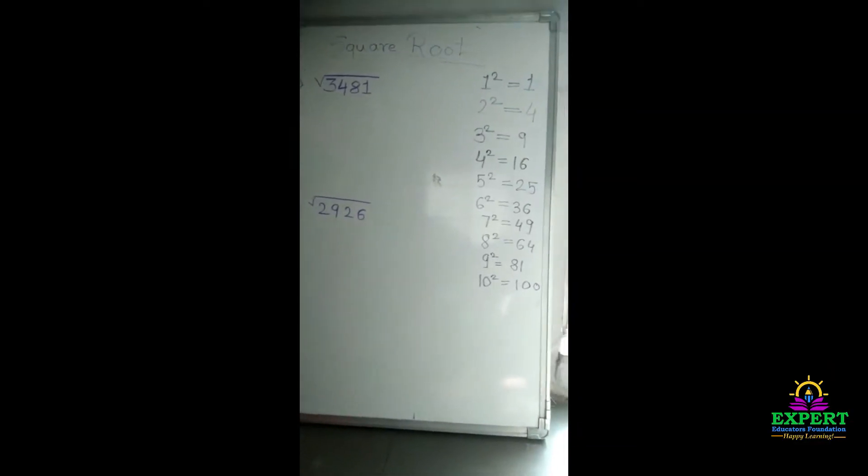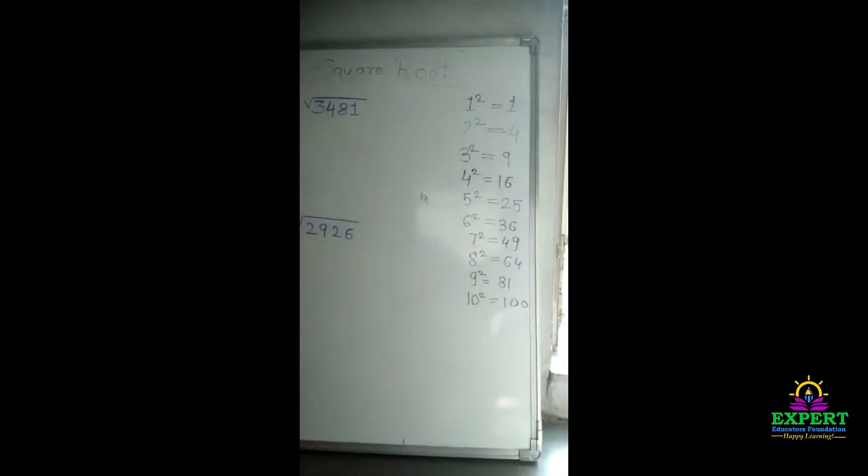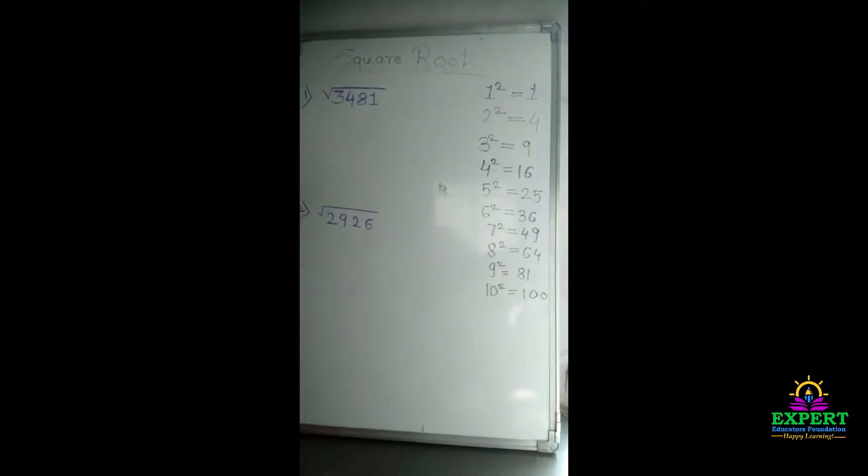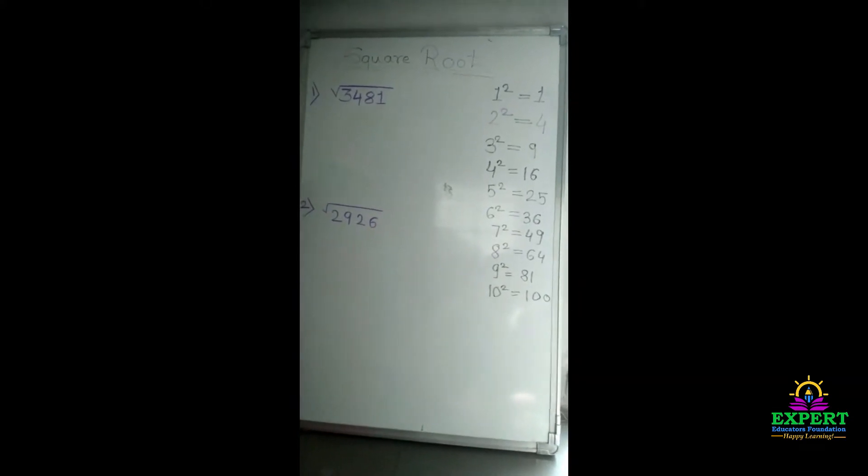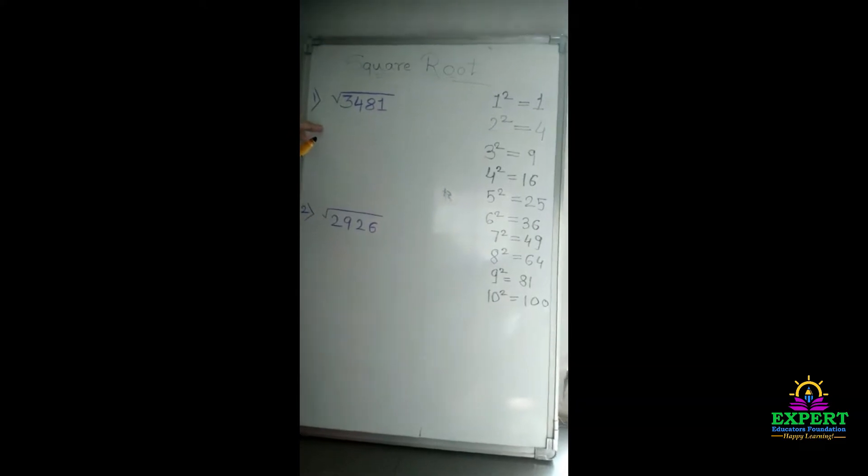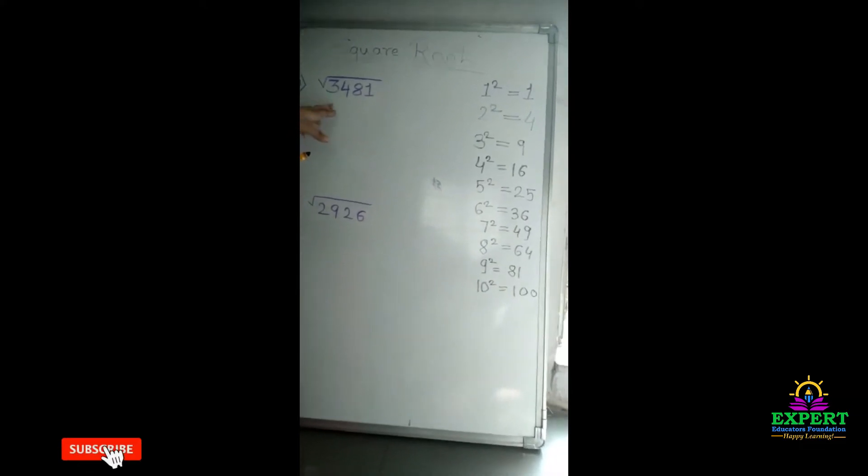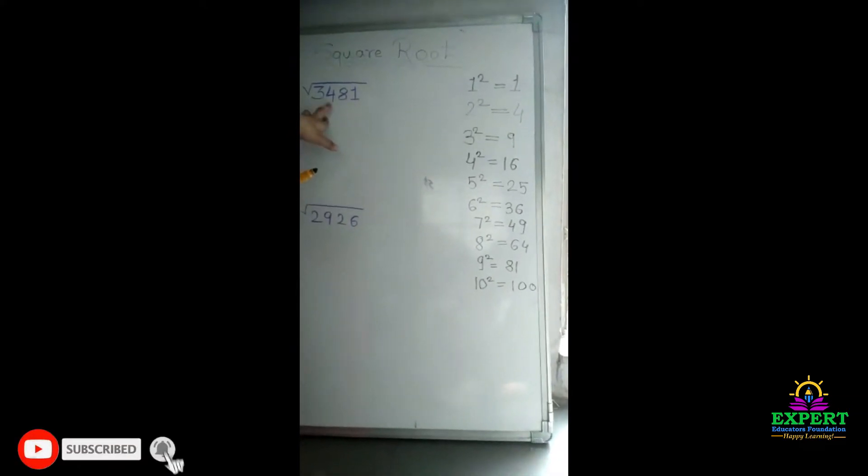Hi, my name is Gargi Pardishi from Standard 7, Model English School. Today I am going to share how to find square root. First, we will take a square, we have 3481.